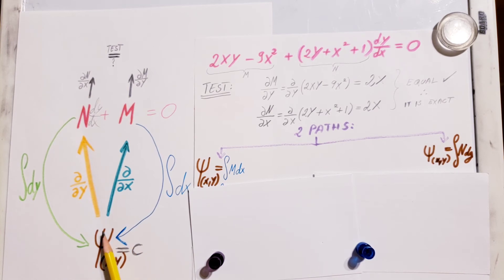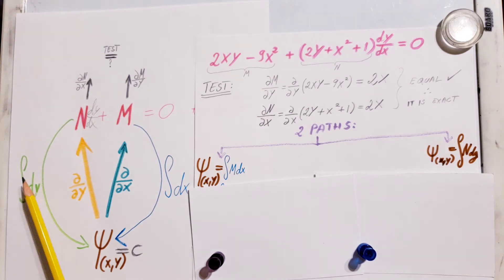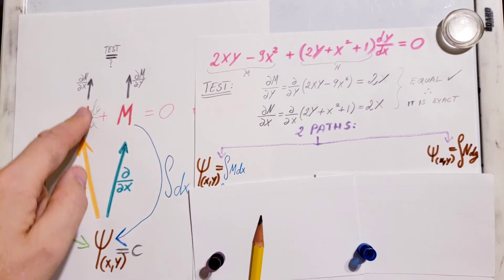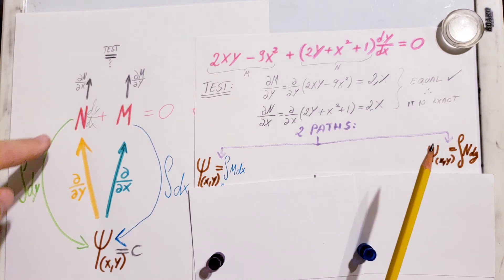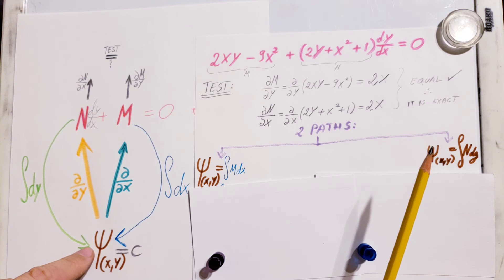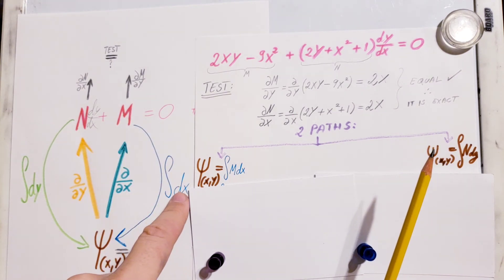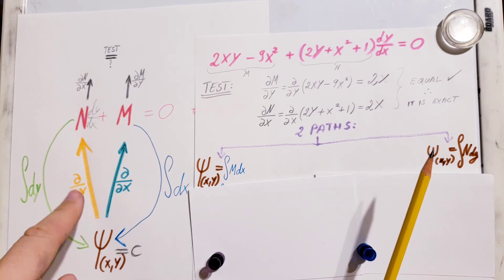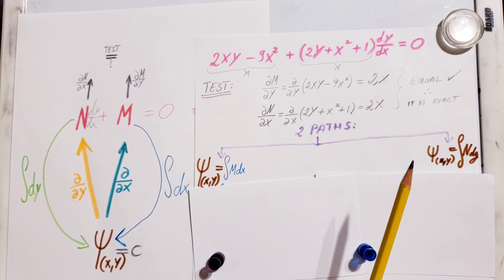After that, the next step will be taking a partial with respect to y, coming up to find N, then taking another integral with respect to dy to get the parent function again. On the second path, you would go the opposite direction: take N, integrate to get the parent function, take a partial with respect to x to get M, and use an integral with respect to x to come back. That's why these circles go up and down — we're jumping between these two functions with little twists that help us solve the problem.